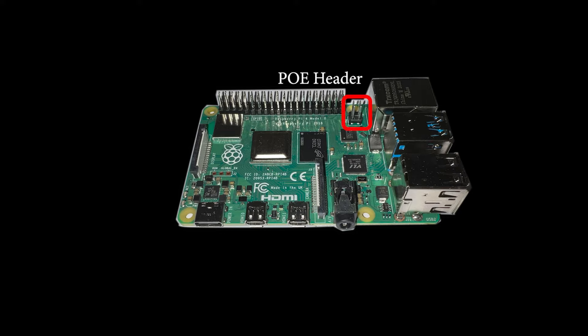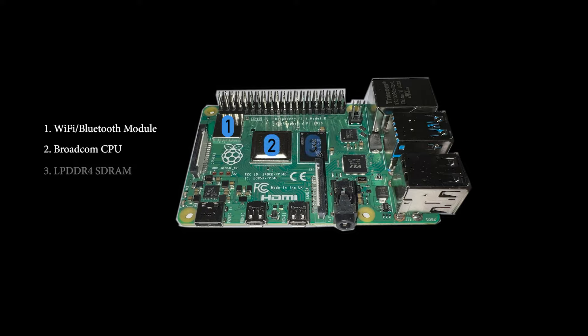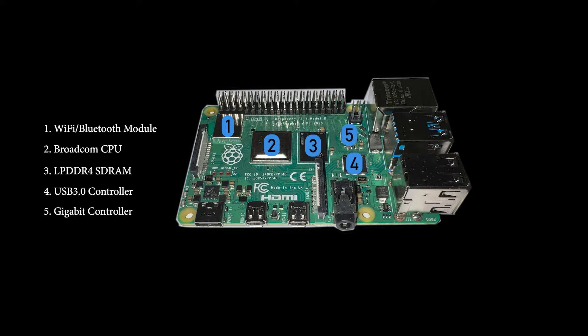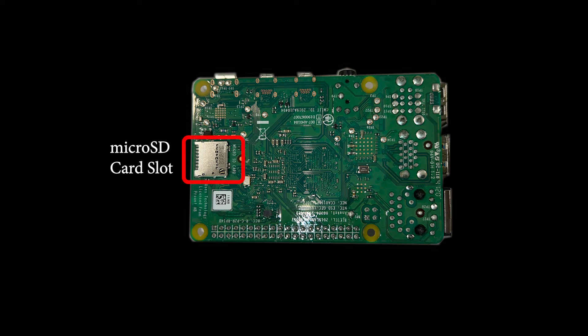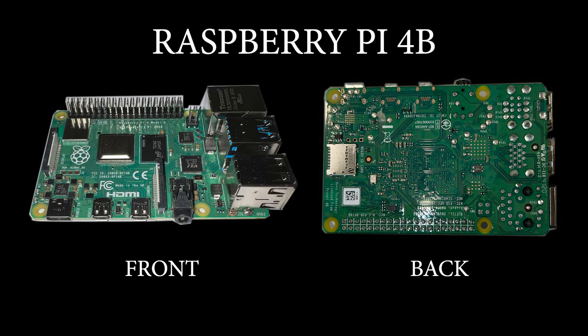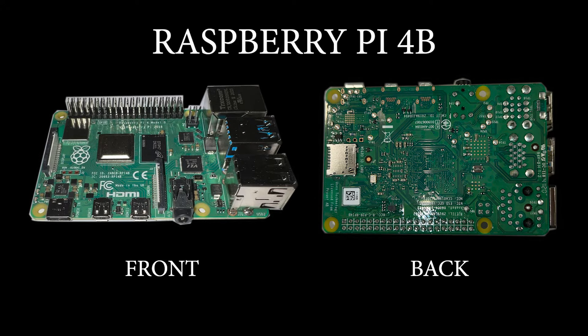Over here, these pins are for your PoE header — if you want to use power over Ethernet, you would add a PoE hat to the solution. Just so you can say you know what everything is called: this is your Wi-Fi and Bluetooth module, this is your Broadcom CPU, this here is your LPDDR4S DRAM, over here is your USB 3 controller, and this last chip is the Gigabit controller. Flipping it over reveals the microSD card slot, but don't put your card in just yet.